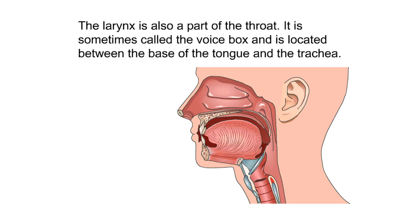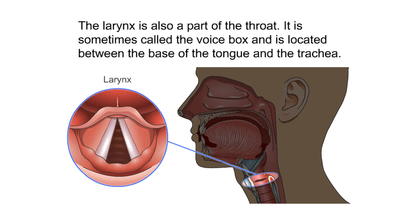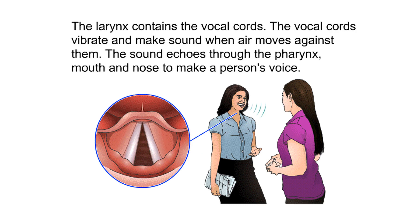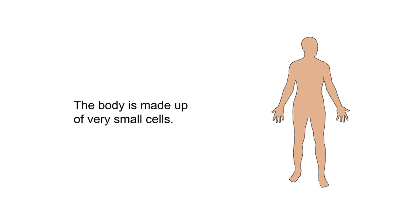The larynx is also a part of the throat. It is sometimes called the voice box and is located between the base of the tongue and the trachea. The larynx contains the vocal cords. The vocal cords vibrate and make sound when air moves against them. The sound echoes through the pharynx, mouth, and nose to make a person's voice.